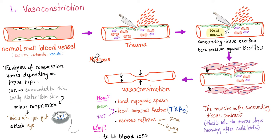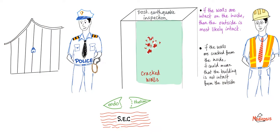We have talked about vasoconstriction before — it's a local myogenic spasm. The platelet is just floating around, checking the gate. If the gate is secure and the layer underneath is not exposed, everything is fine. But if the gate is cracked open and the subendothelial collagen is exposed, it's on.